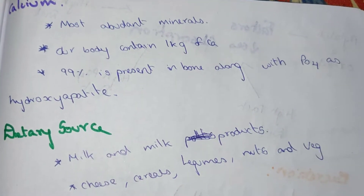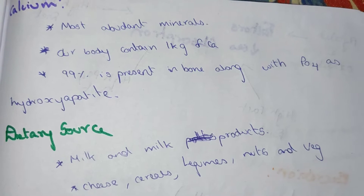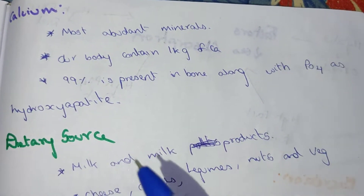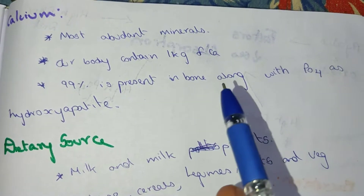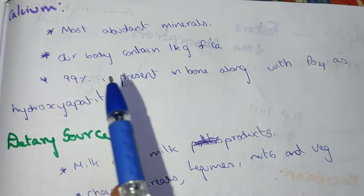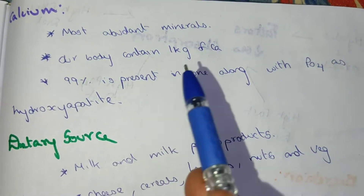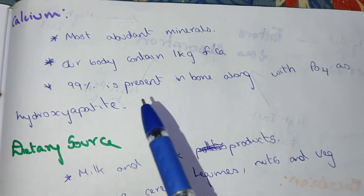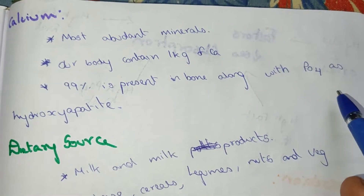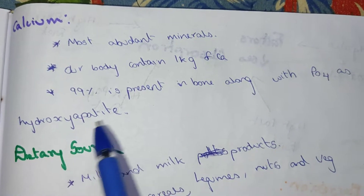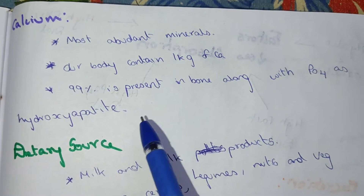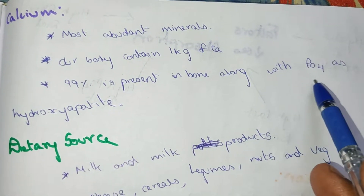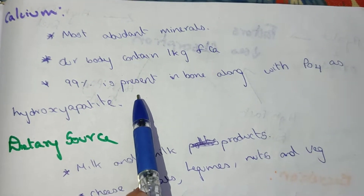Welcome to the medicine YouTube channel. In this video we are going to see about calcium. Calcium is the most abundant mineral — our body contains one kilogram of calcium. 99 percent is present in bone along with phosphate as hydroxyapatite crystals.